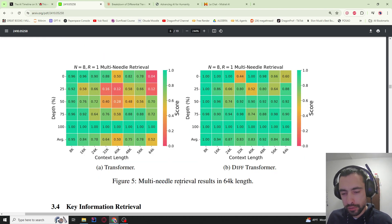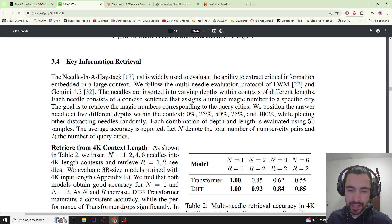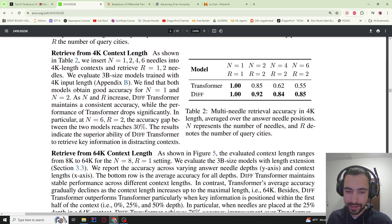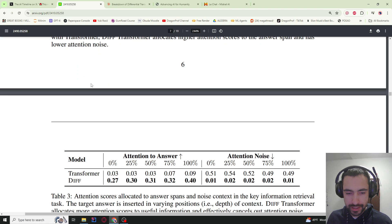Here we can see multi-needle retrieval results in 64,000 length of tokens. They just inject some small information sentences into big chunk of text and see how well the model can find it. Multi-needle means multiple of these sentences throughout the haystack. If we go from 8k, 16k, 24k tokens, in 8k it retrieves pretty well, but then up to 64k it does not retrieve too well. Diff transformer is a lot more green and a lot more correct retrieval. This is just technical information like how they perform the test. I'm not going to bother with this, this is just very dry.